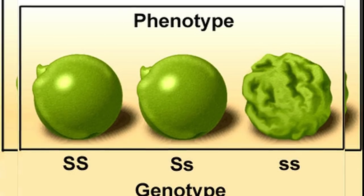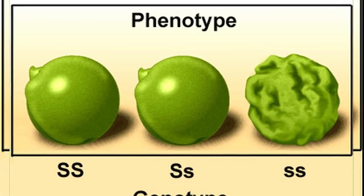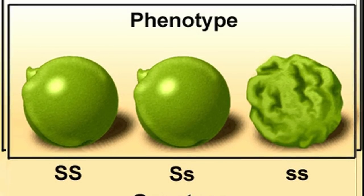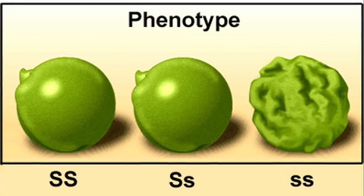Beyond that, he also showed that the smooth trait was dominant, so that even if a pea plant possessed both smooth and wrinkled alleles, it would only express the smooth trait. Wrinkled traits were only produced when breeding two copies of the recessive wrinkled trait.